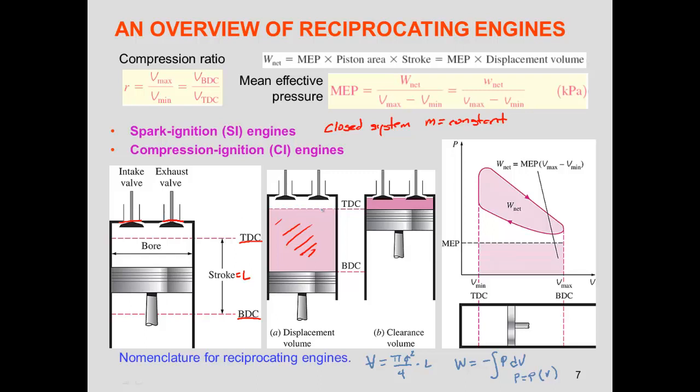The volume we cannot make use of is the clearance volume — also called the dead volume. It is dead volume because we cannot extract work from it, yet we do introduce work into it.